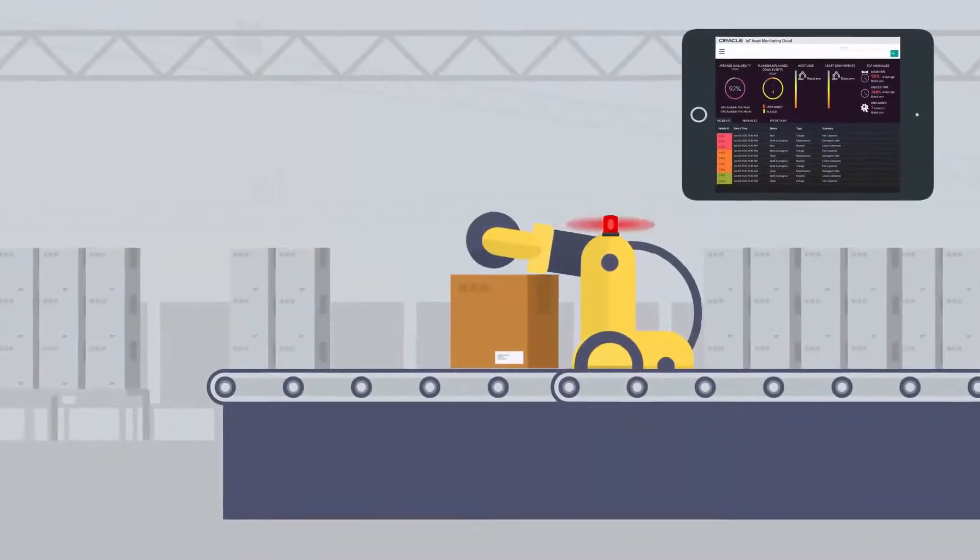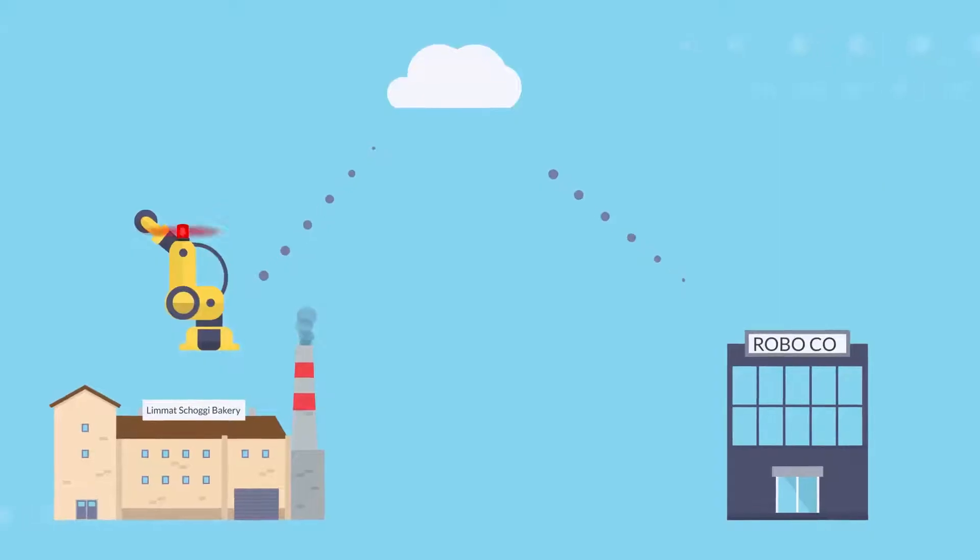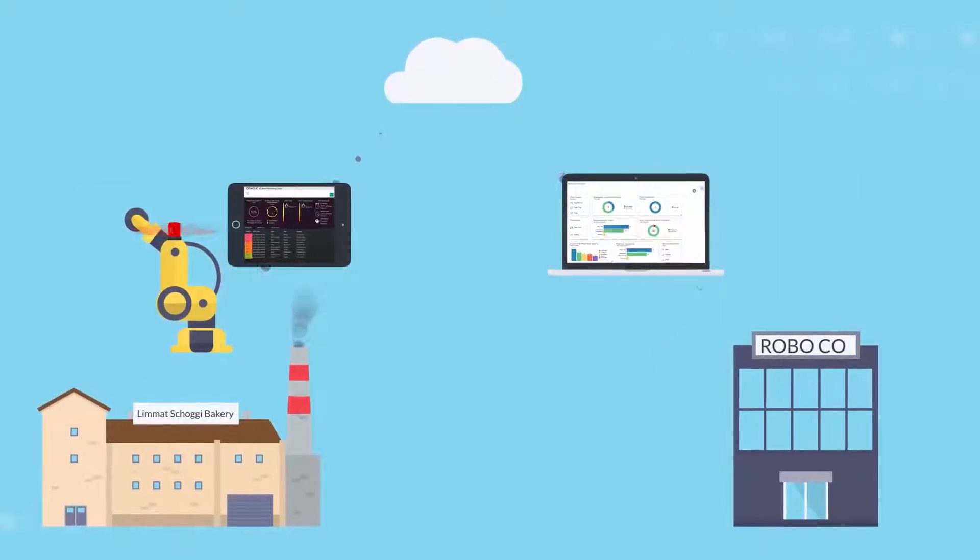On Monday morning, the IoT Asset Monitor detects overheating on one of the robot's servo motors, and auto-creates a work order in the Oracle Maintenance Cloud application.